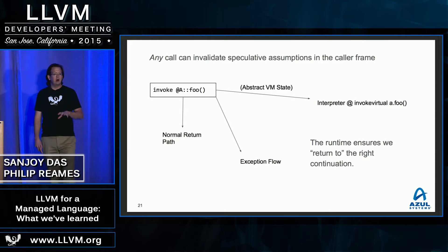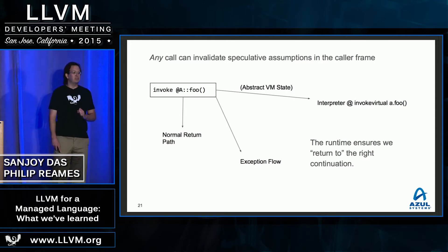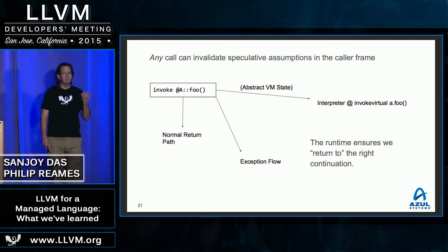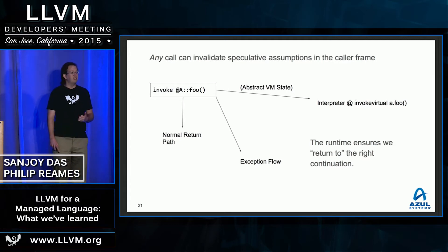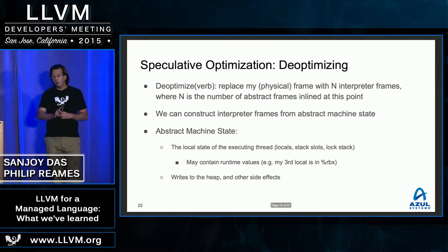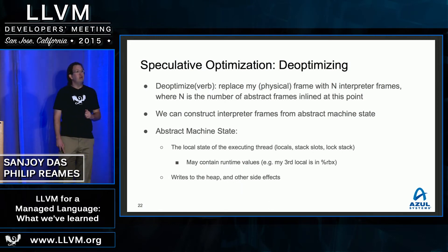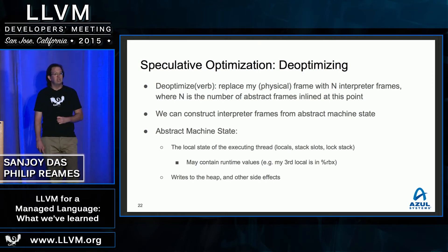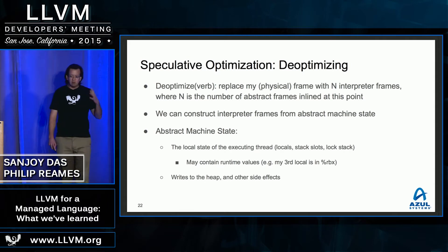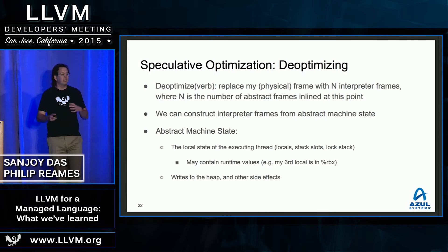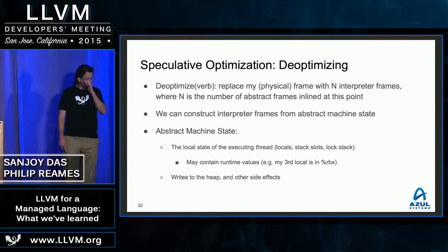Specifically, all of our invokes end up having three continuation points: the normal return edge, the normal exceptional edge, and a third continuation point back in the interpreter if one of our speculations was in fact violated. That event — taking a speculation violation and getting back in the interpreter — is known as deoptimization. Specifically, we're replacing a single compiled frame with up to N interpreter frames, where N accounts for inlining. Then we jump back to the interpreter to resume execution, because it's going to be conservatively correct.